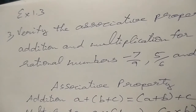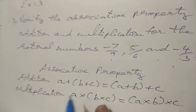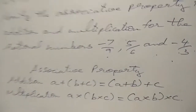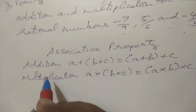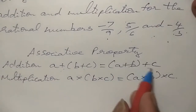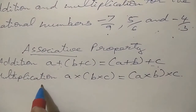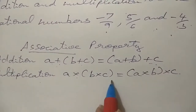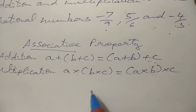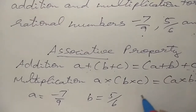Exercise 1.3, the third sum. Verify the associative property for addition and multiplication for the rational numbers minus 1 by 9, 5 by 6, and minus 4 by 3. The associative property formula for addition is: a plus (b plus c) equals (a plus b) plus c — just shift the brackets. We take a equals minus 1 by 9, b equals 5 by 6, and c equals minus 4 by 3.